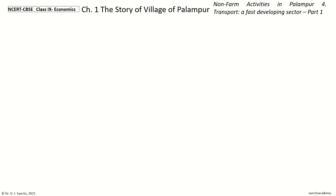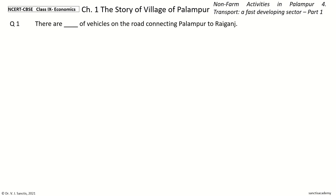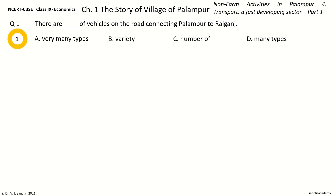Question 1: There are dash of vehicles on the road connecting Palampur to Raiganj. The options are: Very many types, Variety, Number of many types. And the answer is Variety. So, there are variety of vehicles on the road connecting Palampur to Raiganj.